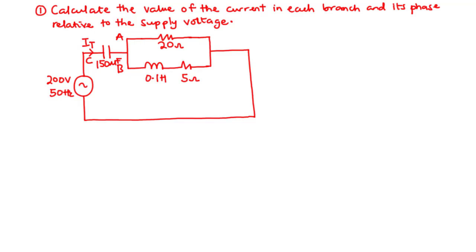Let's try to solve this circuit. Calculate the value of the current in each branch and its phase relative to the supply voltage. Considering the circuit, we have a 200 volt AC supply. We have four passive elements: two resistors, one inductor, and one capacitor all connected in this circuit. We are supposed to find the value of current flowing through each of the branches A, B, and C.